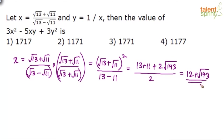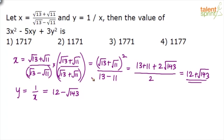Now, if x equals 12 + √143, we know that y equals 1 by x. If you go through the algebra video, you would know that y comes out to be 12 - √143. Again, rationalization — 1 by x will be 1 by (12 + √143). Multiply both numerator and denominator by (12 - √143).